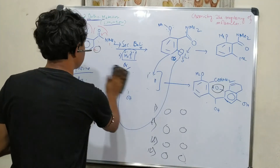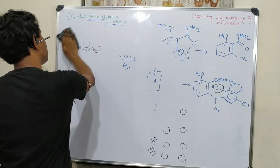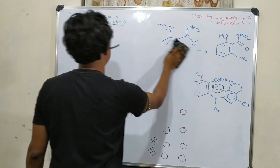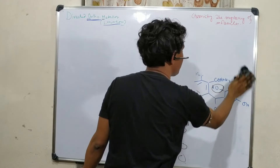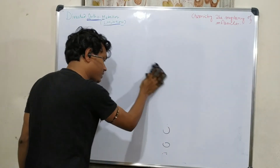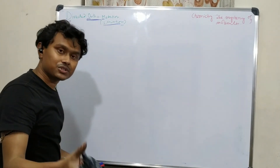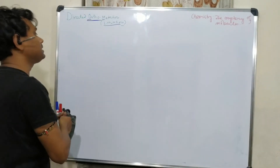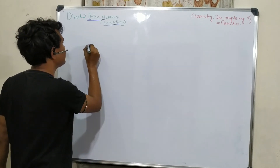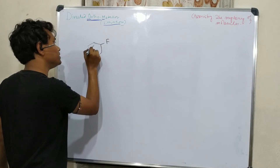If you understand these examples properly, you may be able to solve related problems in exams. I believe directed metallation or lithiation is very important. It could appear not just from these examples directly, but also as a step generating an anion that is then used in other reactions. Let's discuss another example — benzyne production.